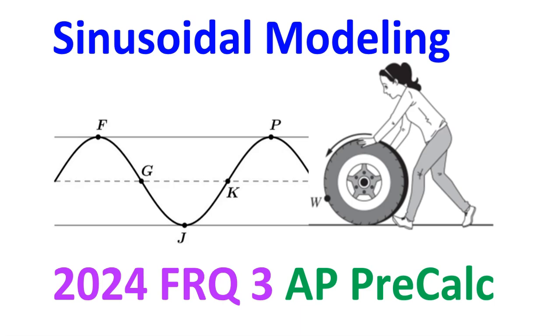This is free response question number 3 from the 2024 AP Pre-Calculus exam. It's about modeling real-world scenarios with either a sine function or a cosine function.